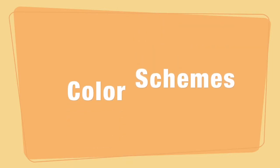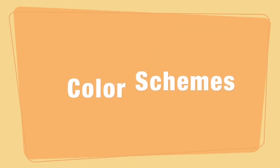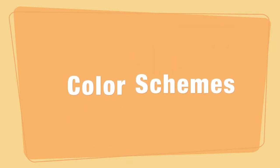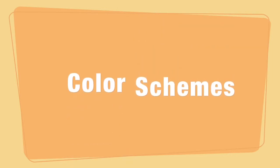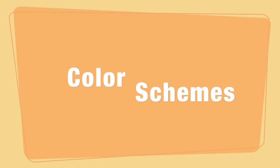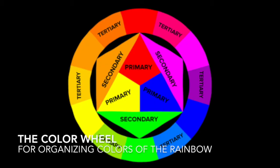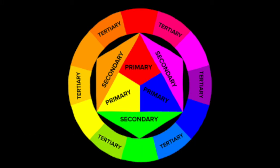Hey guys, in this video we are going to take a look at a whole bunch of color schemes and how you can use them in your own artwork. First, let's take a look at the color wheel. This thing is a tool that is used to organize the colors of the rainbow. I am going to reference this a lot in the video, so it's important to have some knowledge of the color wheel.